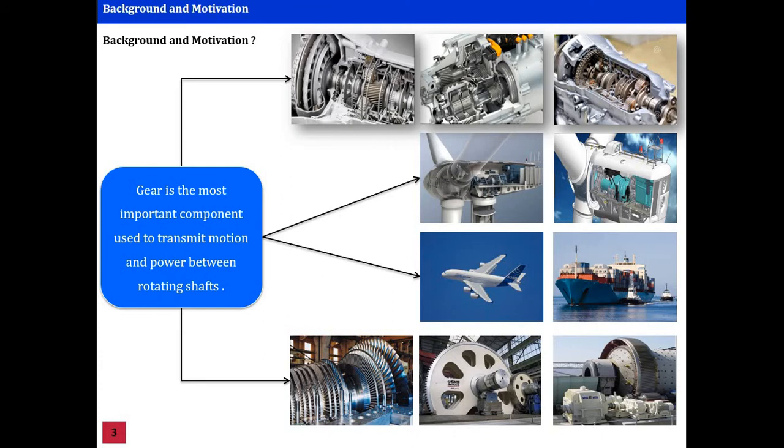This work is in the context of mechanical design optimization. As we know, gear is the most important component used to transmit motion and power between rotating shafts. It is widely used in mechanical devices and machines, such as automobile gearboxes, wind turbines, airplanes, marine vessels, and huge industrial power transmission.